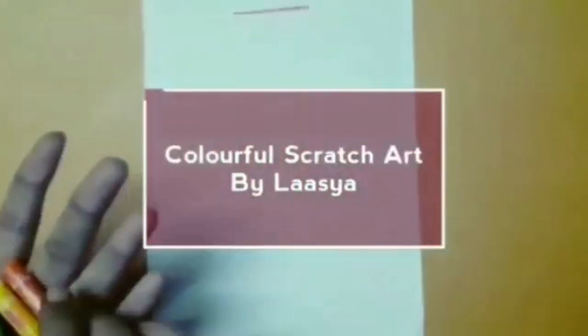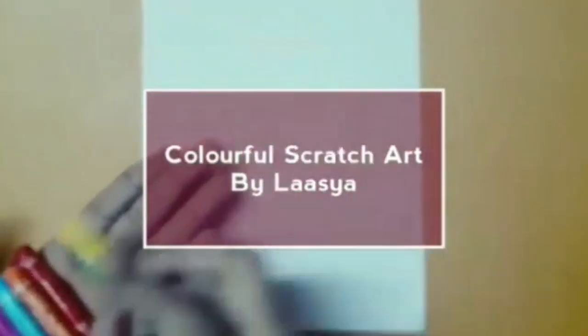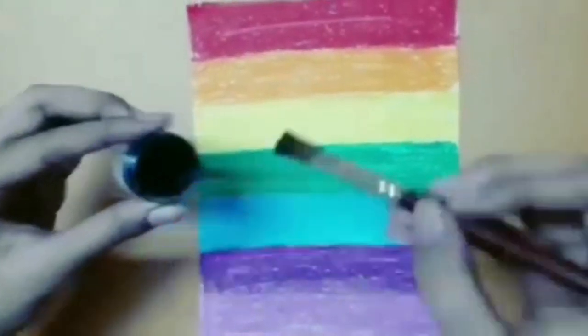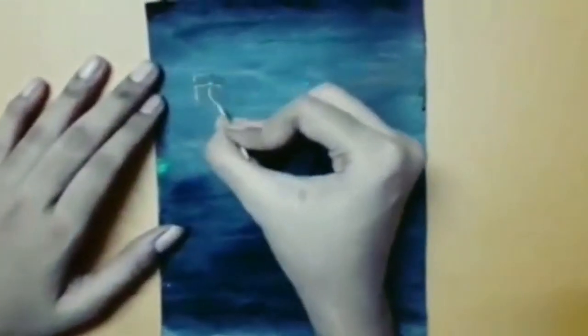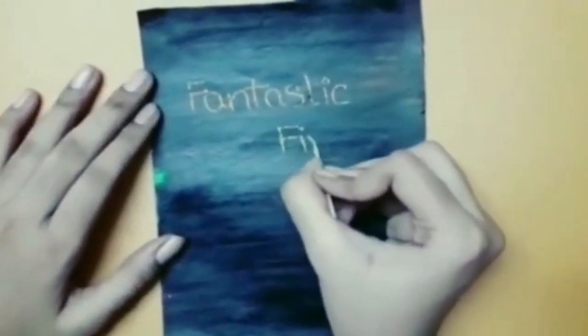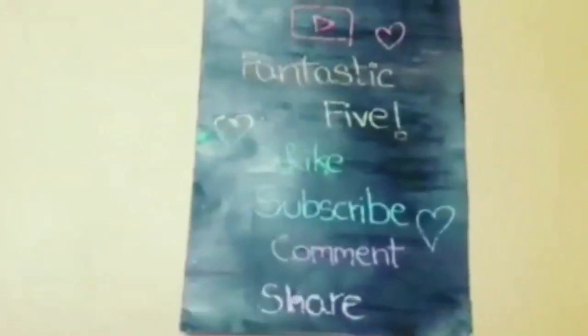Colorful scratch art by Lassia. Color different colors on the paper as shown. Paint black color on it. Let it dry for 2 minutes. Make designs on the paper by scratching it with a toothpick. Our colorful scratch art is ready.